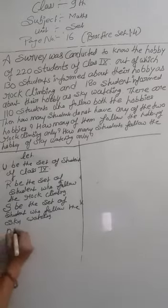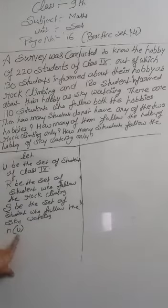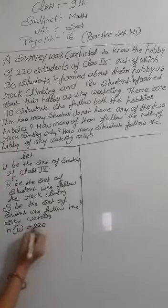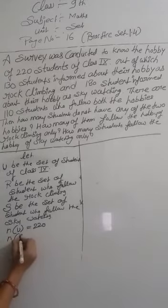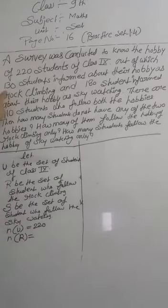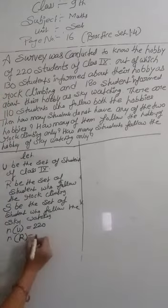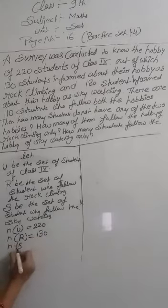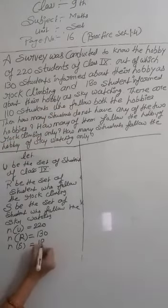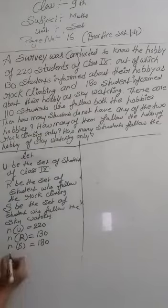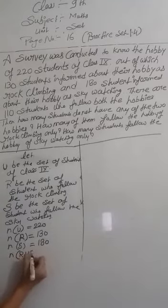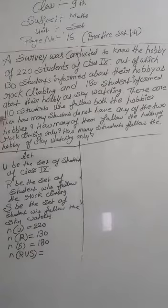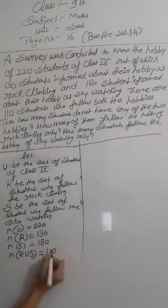Now we will write: number of U is 220, number of R is 130, number of S is 180, and number of R intersection S is 110.